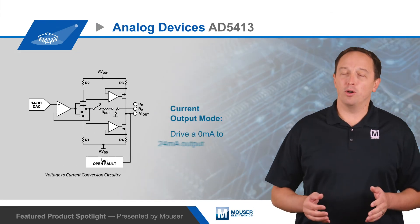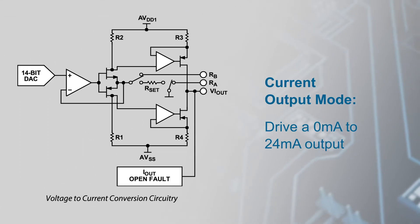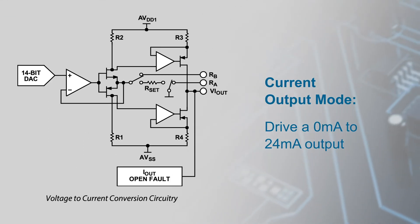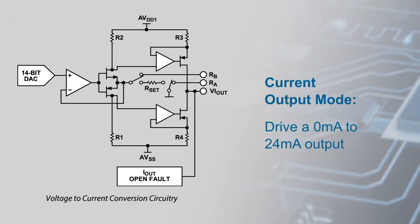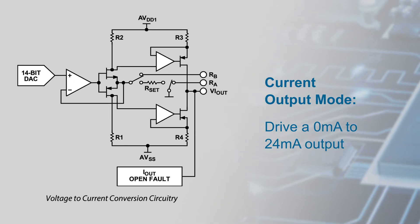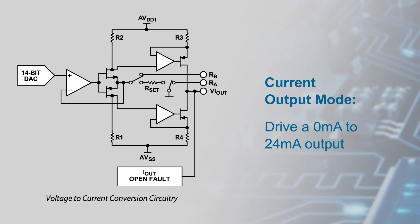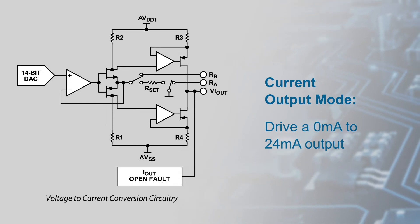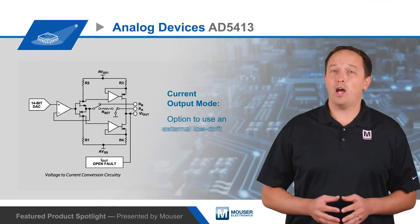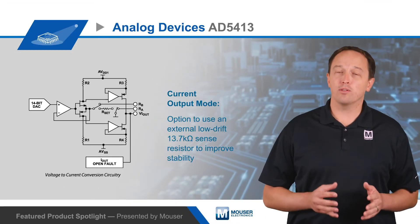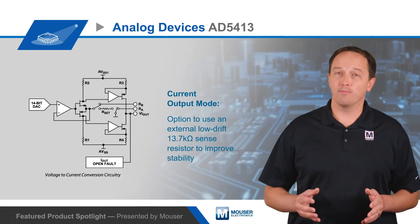In Current Output Mode, the AD5413 can drive a 0mA to 24mA output. This output current is internally mirrored so that it appears as a current source output to the application. The current mode circuit includes an internal sense resistor for easy implementation, with the option to use an external low-drift 13.7 kΩ sense resistor to improve stability.